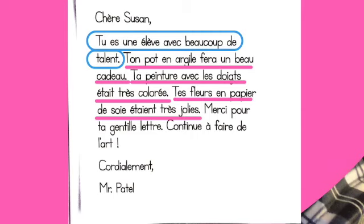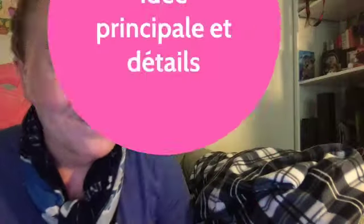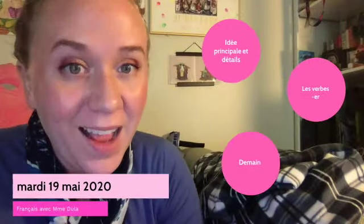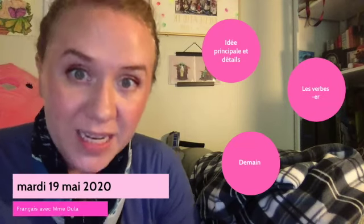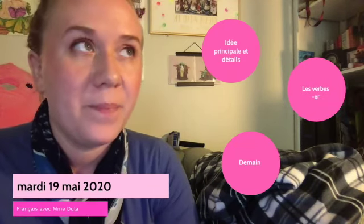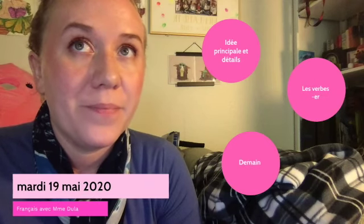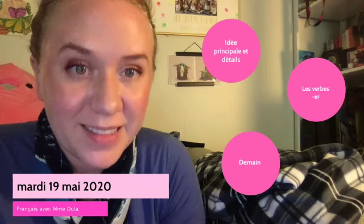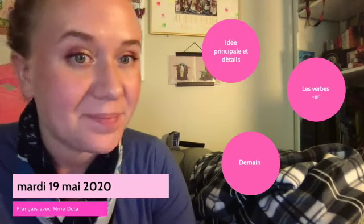Pourquoi? Parce que le pot en argile fera un beau cadeau, et la peinture avec les doigts était très colorée, et les fleurs en papier de soie étaient très jolies. Ce sont des exemples de comment elle est une élève avec beaucoup de talent. Voilà l'idée principale et détail. On va utiliser ces idées pour trouver l'idée principale et les détails dans les textes cette semaine.